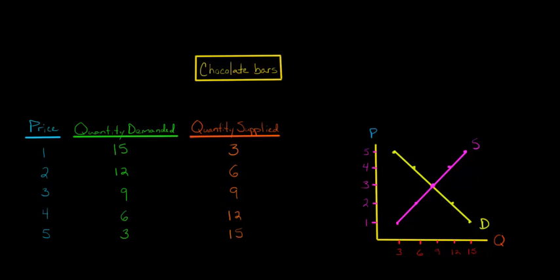Now where these two curves intersect, they intersect right here. So that's at the point 3, 9. So a price of 3, so P equals 3, and then Q equals 9.